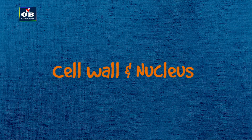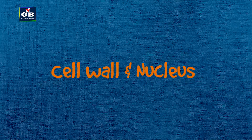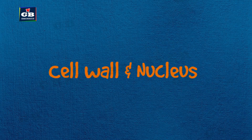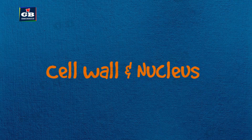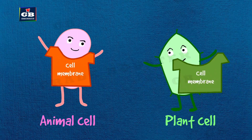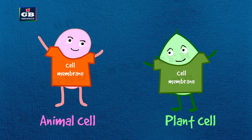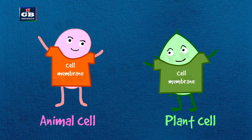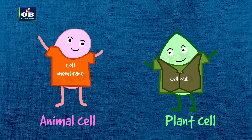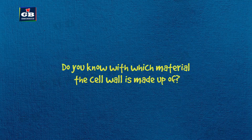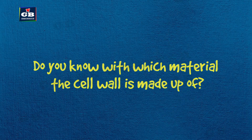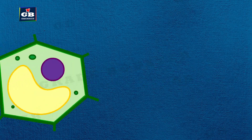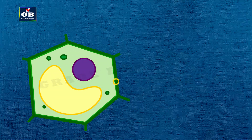In this video we will see the structure and functioning of cell wall and nucleus. Both plant and animal cells have a cell membrane, but plant cells have one more outer rigid cover called the cell wall. Do you know what material the cell wall is made up of?